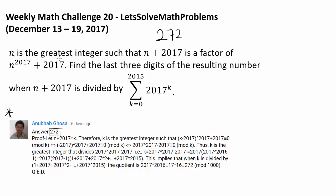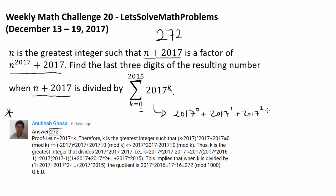We have n being the greatest integer such that n plus 2017 is a factor of this expression. We wish to find the last three digits of the resulting number when we divide n plus 2017 by the summation: 2017 to the 0 power, where k starts at 0 and goes all the way up to 2015, so plus 2017 to the 1, plus 2017 to the 2, all the way to plus 2017 to the 2015 power.